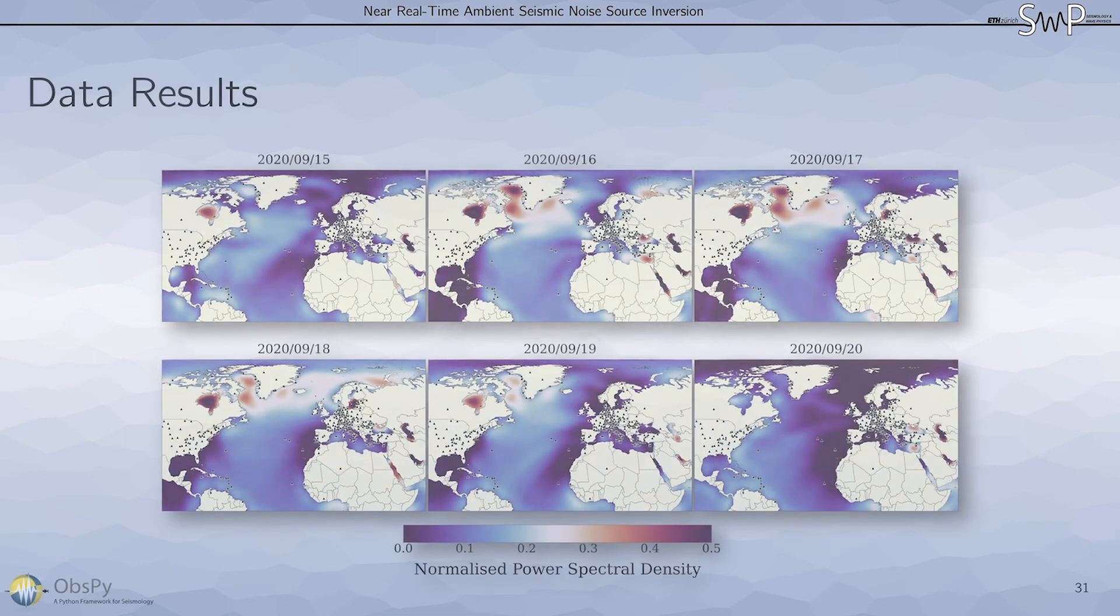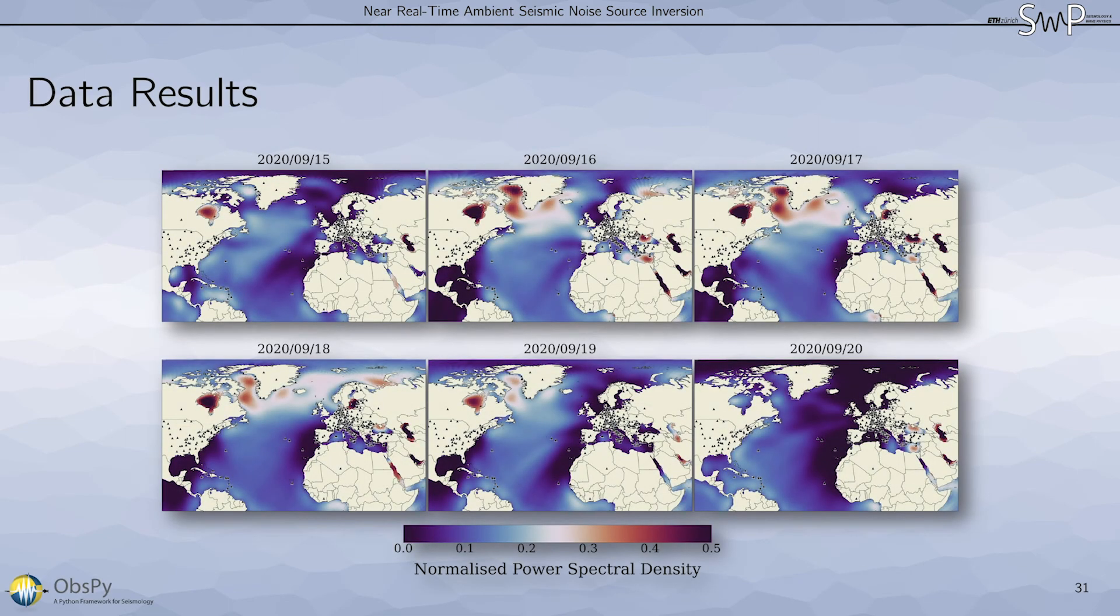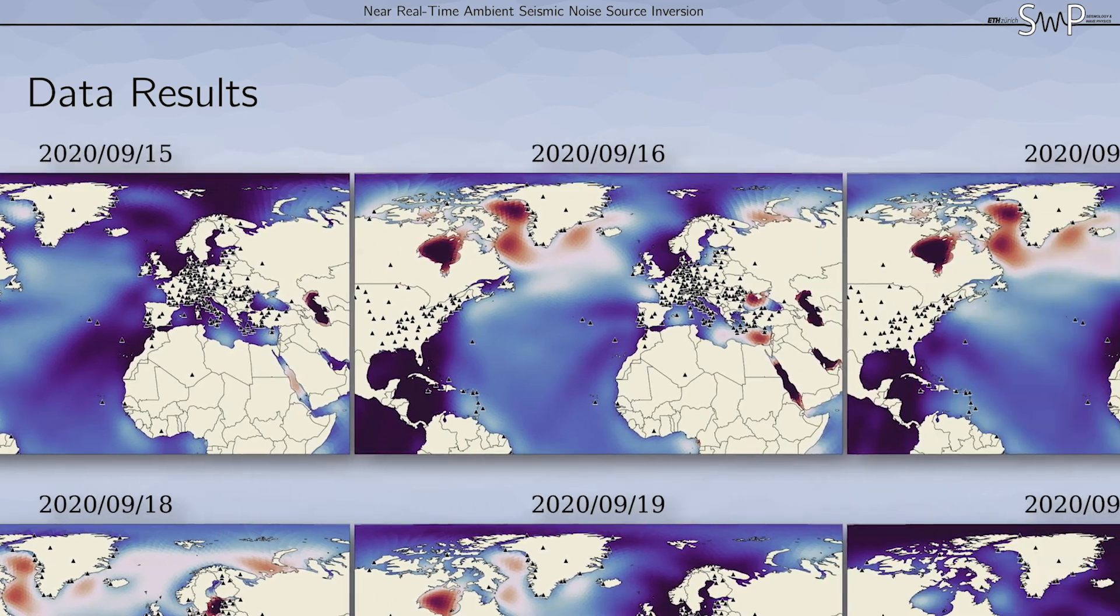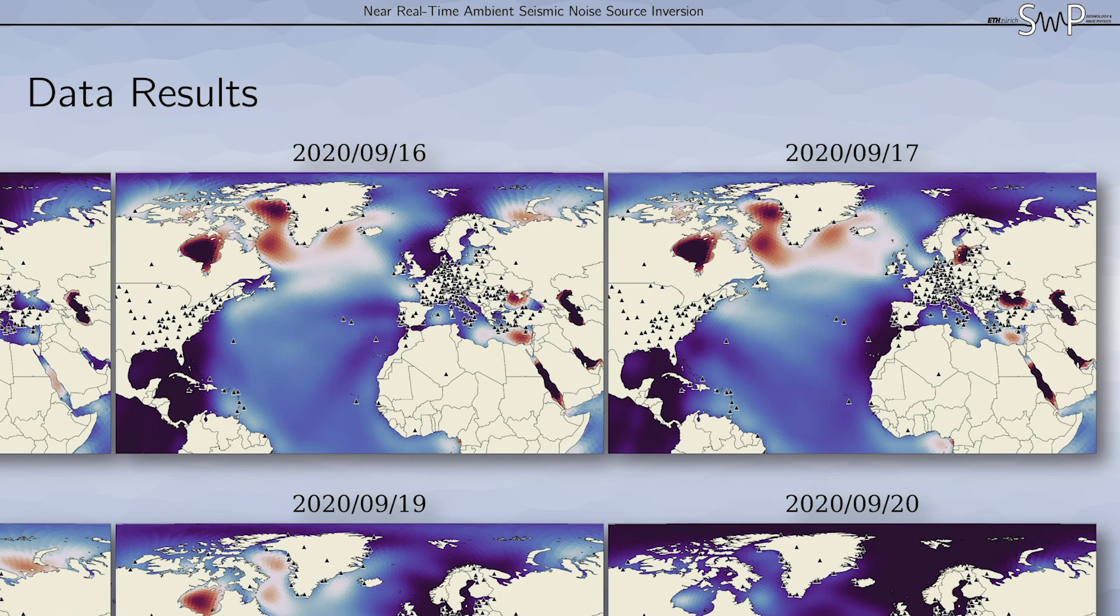We downloaded and processed the data for each individual day using ObsPy. Looking at the individual days, we see that there are pretty strong sources in marginal seas, for example Hudson Bay and the Caspian Sea, which we do not expect. This is mainly due to the lack of signal that we have in one day of data.